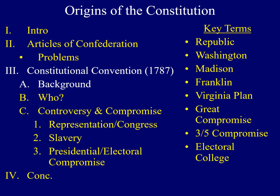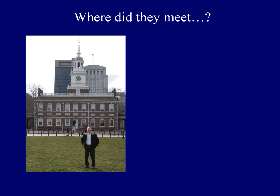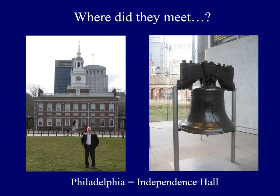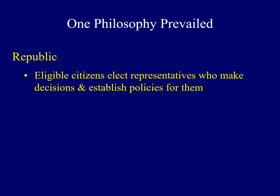The meeting to modify the Articles of Confederation is called the Constitutional Convention. Delegates met in 1787 in the nation's largest city, Philadelphia, at a building called Independence Hall. One philosophy united all the delegates: they wanted to establish a republic. A republic is when eligible citizens elect representatives who make decisions and establish policies for them. In the United States, we live in a type of democracy — specifically, a republic.